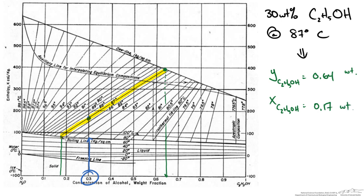So now we know we have two phases given our 30 weight percent solution at 87 degrees. When this separates into the two phases at equilibrium, one will have 0.64 weight fraction of ethanol in the vapor phase, and the liquid phase will have 0.17 weight fraction of ethanol. So that is how we use the tie lines.